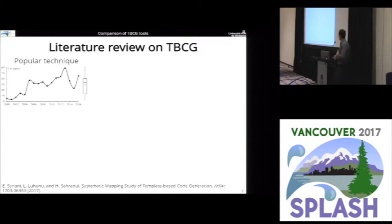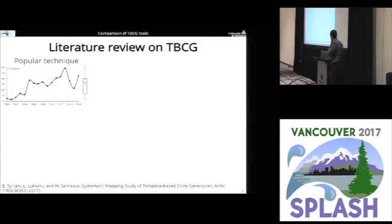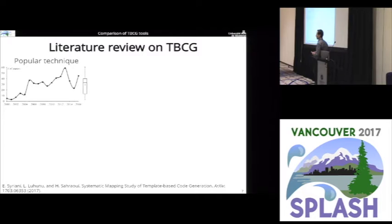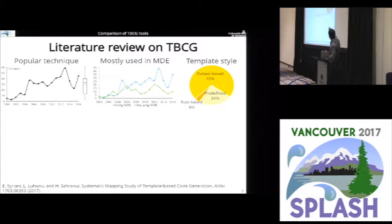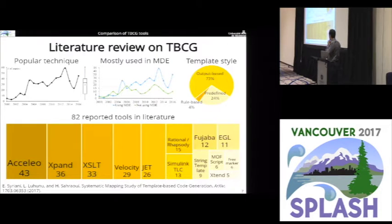In previous work, we did a literature review on template-based code generation — the article can be found on arXiv and is also in revision as a journal paper. We found it is quite a popular technique, with a minimum of about 30 articles per year using template-based code generation. It is mostly used in MDE since the early 2000s. There are different template styles, and we focus on the most popular one according to the literature, which is output-based — where the template looks like the output but with metacodes inside. From that literature review, we found over 80 tools reported to be used.